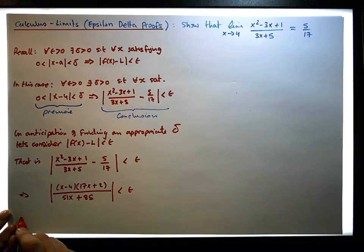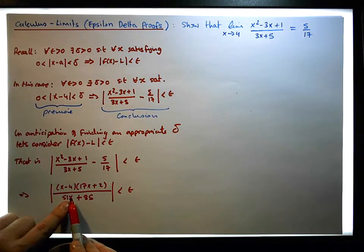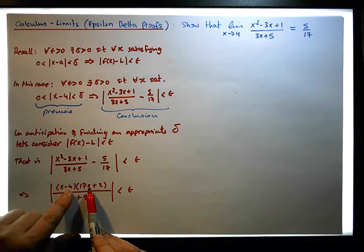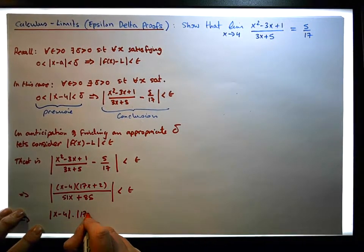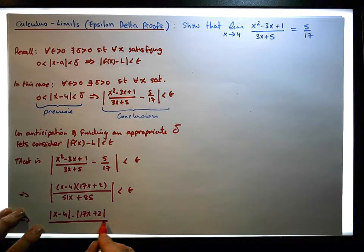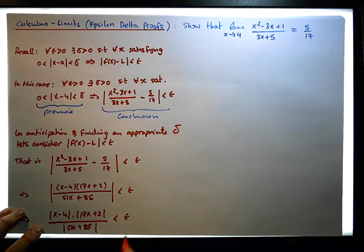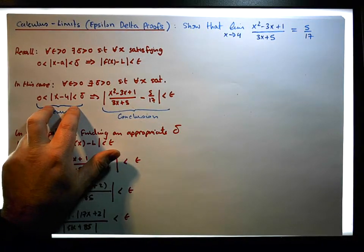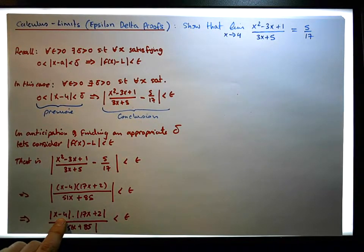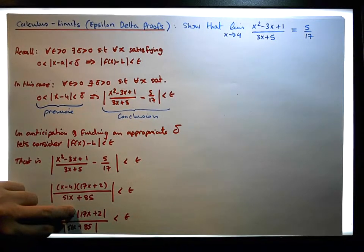So what is this telling us? From this we're going to imply — since the absolute value of a quotient is the absolute value of the numerator divided by the absolute value of the denominator, and the absolute value of a product is the product of the individual absolute values — this reduces down to the absolute value of x minus 4 times the absolute value of 17x plus 2, all over the absolute value of 51x plus 85, and this needs to be less than epsilon. So we have the x minus 4 from the premise, but we have some baggage — this fraction with two absolute values dependent on x. So what I'd like to do next is apply the usual attack strategy.